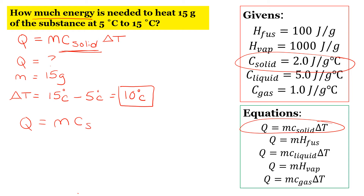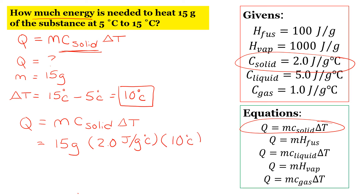Q equals mc of solid delta T. Our mass is 15 grams. The specific heat of the solid is 2.0 joules over grams degrees Celsius, times the change in temperature, which is 10 degrees Celsius. When you calculate that, you get 300 joules. That's our answer.